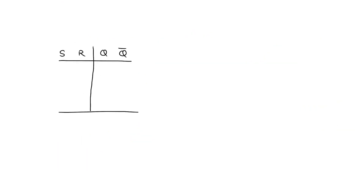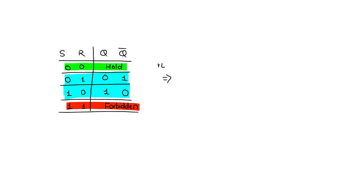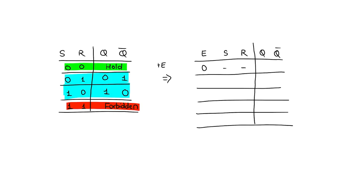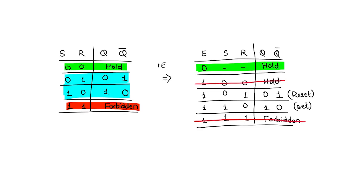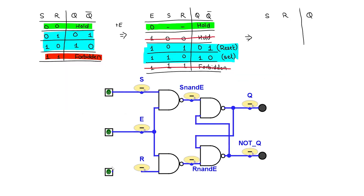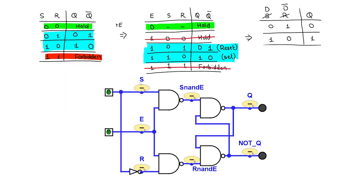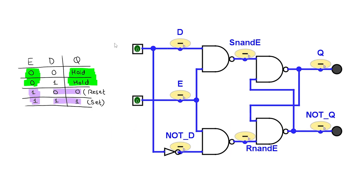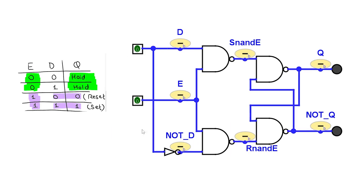Furthermore, an AND gate followed by an inverter is actually a NAND gate, so we use NAND gates instead. Since we can enter hold mode with only the enable signal, we don't need to worry about the condition when both inputs are zero. So ignoring the hold mode and forbidden mode, in the remaining input combinations the set and reset inputs are always different.